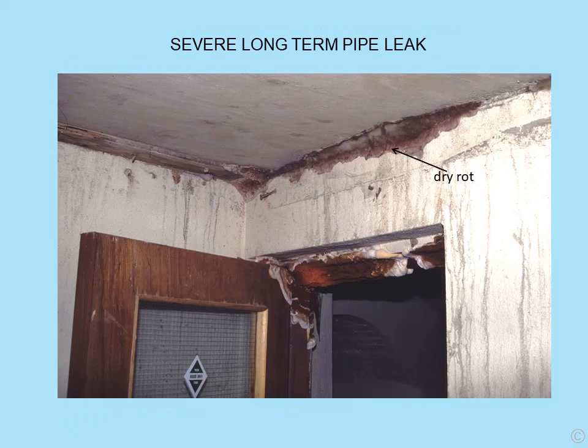Severe long-term pipe leak — you can see the water runs, and dry rot has developed as a result, with the fruiting body visible over the doorway.